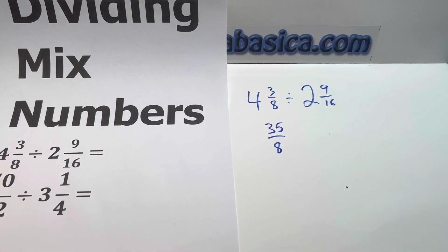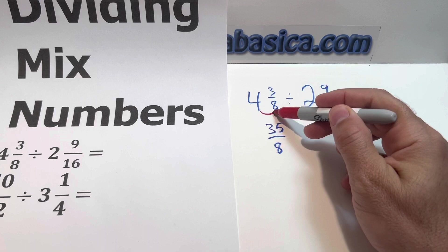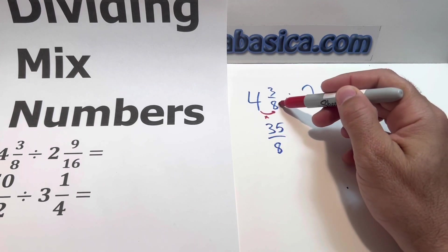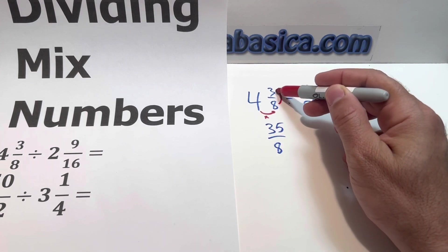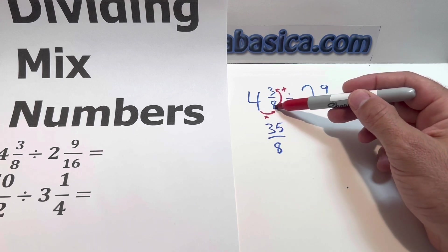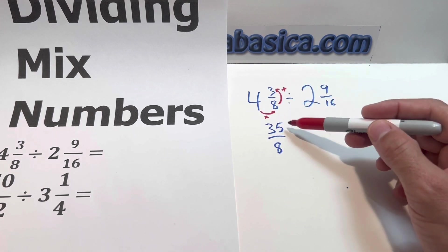So what we did was, here is times, and here is plus. So you're multiplying by this, and you add this one, 35 over 8.